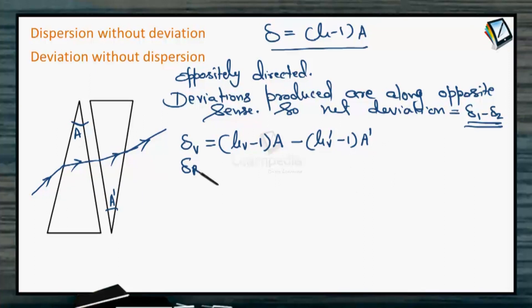Here we are using dash with all the symbols. So δ for violet is this. δ for red in the same way can be written as (μ_red - 1)A - (μ_red' - 1)A'. And similarly, for the mean color, we can write (μ_yellow - 1)A - (μ_yellow' - 1)A'.